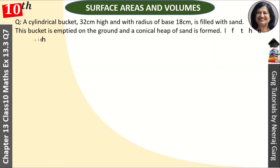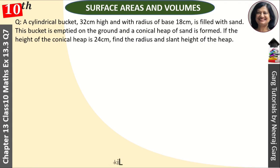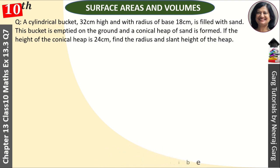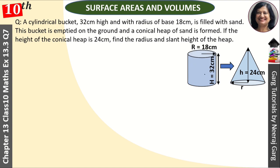Hi, this is Neeraj Garg and you are watching Class 10th Surface Area and Volume. A cylindrical bucket, 32 centimeters high and with the radius of base 18 centimeters, is filled with sand. This bucket is emptied on the ground and a conical heap of sand is formed. If the height of the conical heap is 24 centimeters, find the radius and slant height of the heap. The bucket is in the shape of a cylinder.